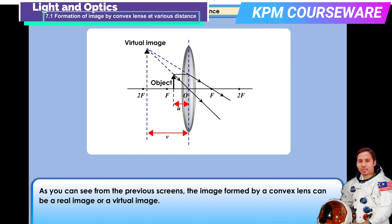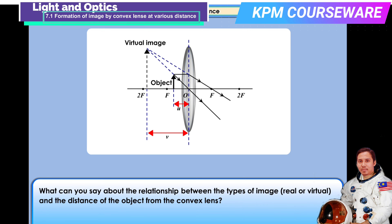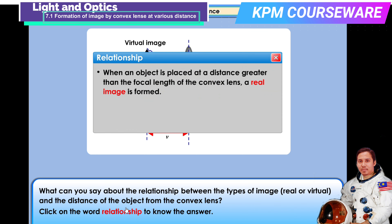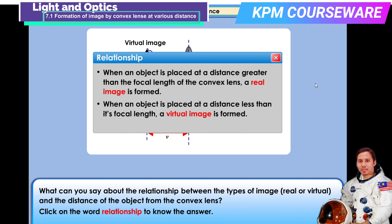As you can see from the previous screens, the image formed by a convex lens can be a real image or a virtual image. What can you say about the relationship between the type of image — real or virtual — and the distance of the object from the convex lens? When an object is placed at a distance greater than the focal length, a real image is formed. When placed at a distance less than the focal length, a virtual image is formed.